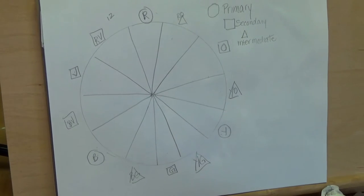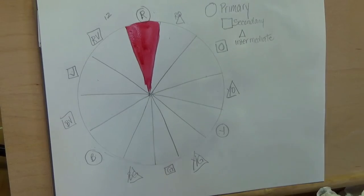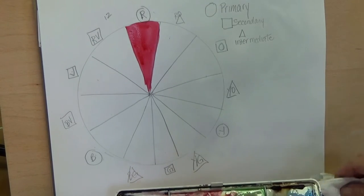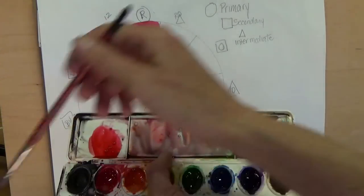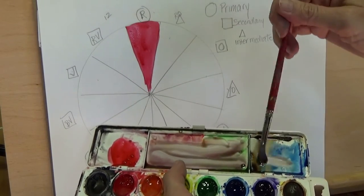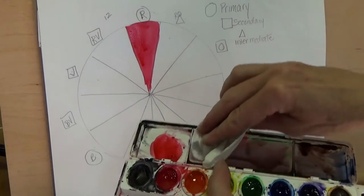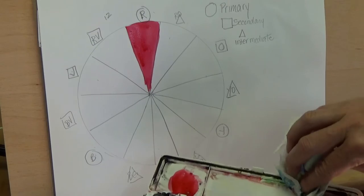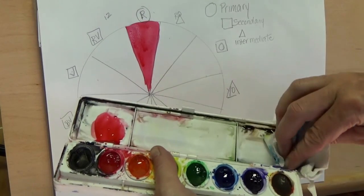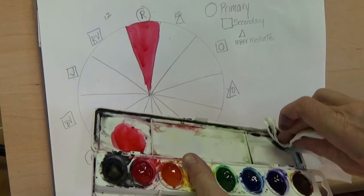All right, now we're going to start. Before you do anything, I broke a rule here. Before you do anything I want you to clean your palette. Get some water on your brush, take a paper towel or a napkin and just wipe it down. Your wells of color should be fairly clean but just wipe it down.